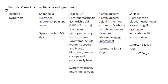Next is Campylobacter, which is the most common cause of gastroenteritis. Symptoms for this organism are diarrhea with blood and mucus, fever, abdominal pain, and vomiting. Symptoms may last between five to seven days.